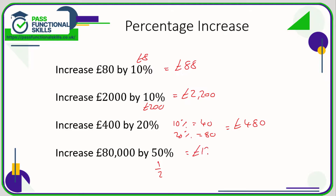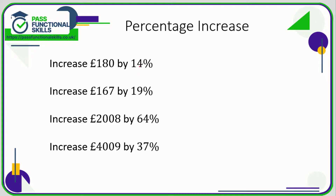So our answer is 120,000 — nice and easy. If you're using a calculator, there are two ways you can do it. First, we need to work out 14% of this amount. You could use our standard percentage multiplier, which is 0.14 multiplied by 180, and that comes to a total of 25 pounds 20. All we need to do is add that on to the 180, giving a total of 205 pounds 20.